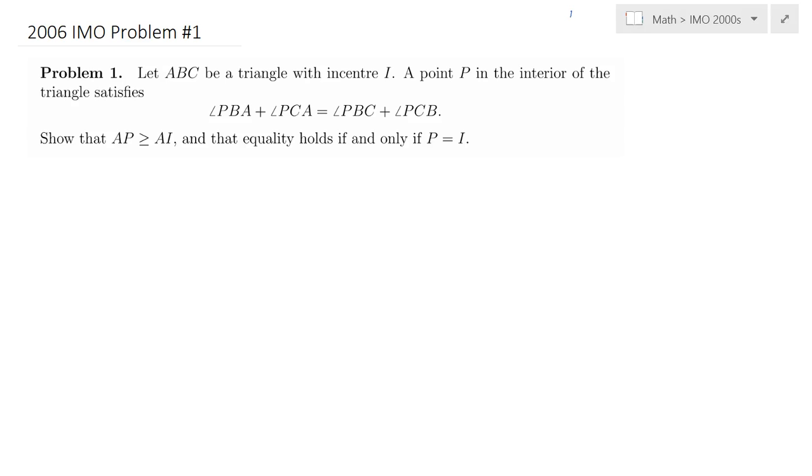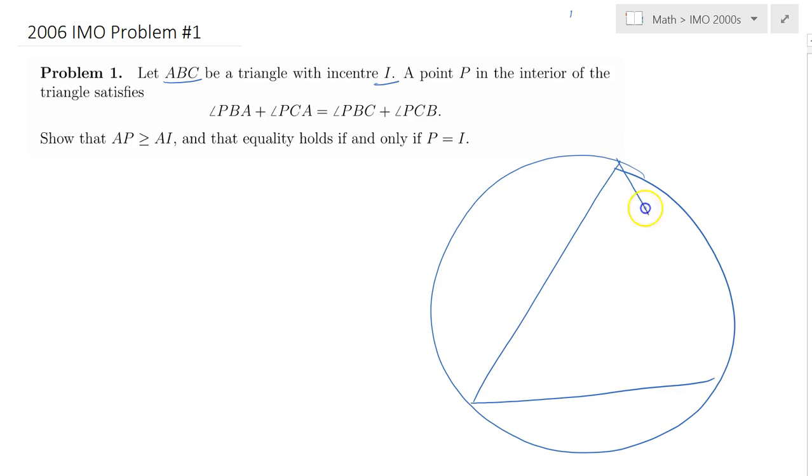Hello everybody, in this lecture we will be solving 2006 IMO problem number one. We're given a triangle ABC with incenter I. Let me make a rough sketch of this triangle, so we have triangle ABC here, that's point A, B, C.